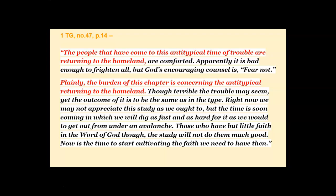From 1TG number 47: the people who have come to this anti-typical timeline of trouble are returning to the homeland. It does not say they are preparing to return, getting ready, or wandering around their existing land. Plainly, the burden of this chapter concerns the anti-typical returning to the homeland. This is all about the return of the people — not the trouble when Jacob was in the land with Laban. You can't take that and twist it around.